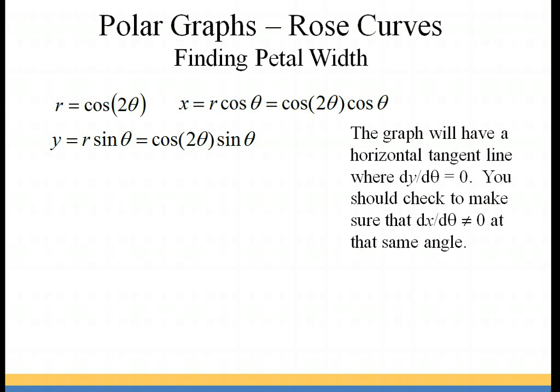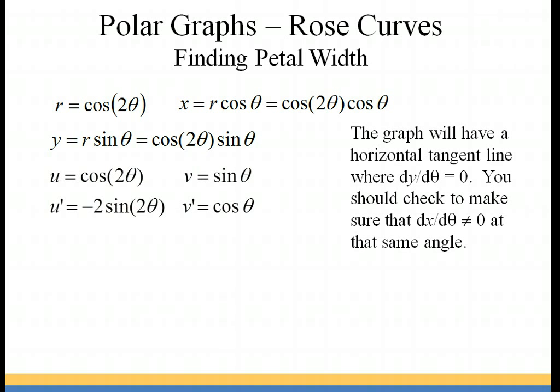Looking at y, we have y equals cosine two theta times sine theta. We want to take the derivative, and since we have two different trigonometric functions, we're going to use the product rule. We let u equal cosine of two theta and v equal sine of theta, then take the derivatives: u prime is negative two sine two theta and v prime is cosine theta. Plugging into uv prime plus v·u prime, we get dy/dθ equals cosine two theta times cosine theta minus two sine two theta times sine theta.